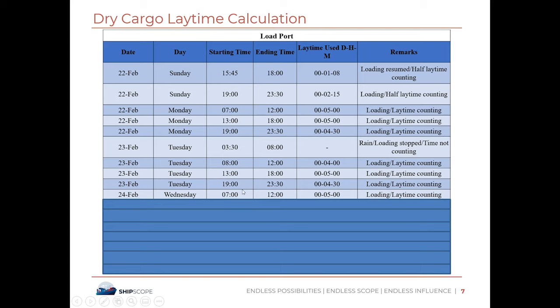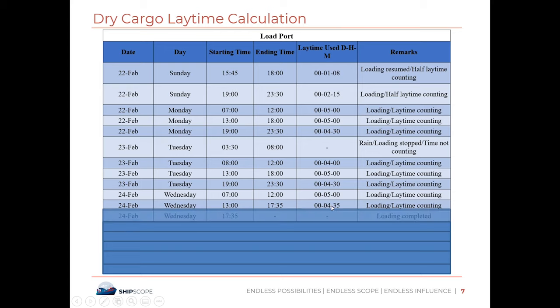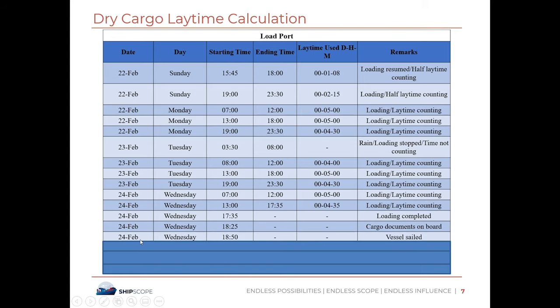On Wednesday 24th, first shift from 0700 to 1200 — five hours. Second shift from 1300 to 1735, because that is when loading finishes — four hours 35 minutes. After that, loading is complete. Documents are on board at approximately 1832.5, and the vessel sails at 1850. We have finished our laytime timesheet.